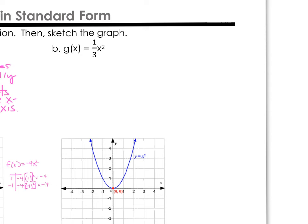This time we have g of x equals one-third x squared, so a equals one-third. The absolute value of one-third is just one-third, and that's between 0 and 1. Because of that, we would describe this graph as compresses vertically.